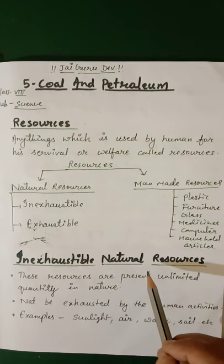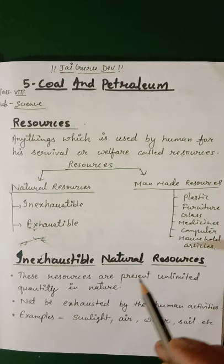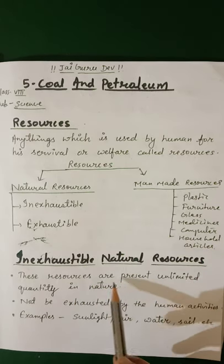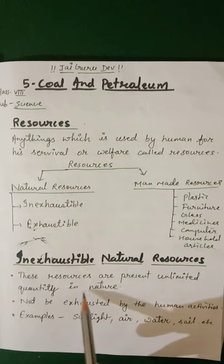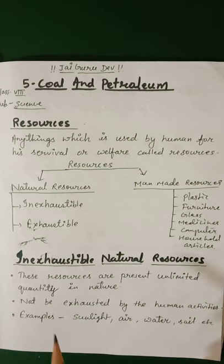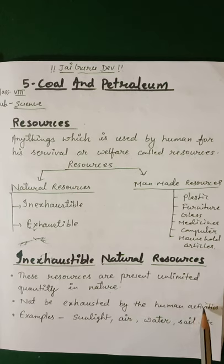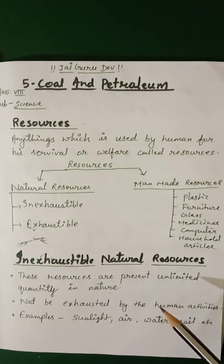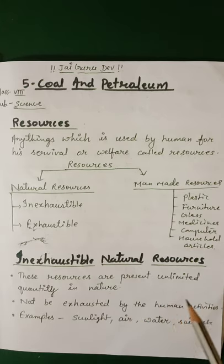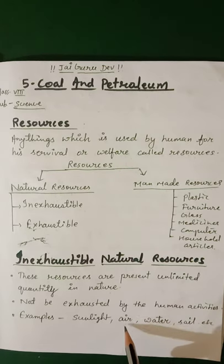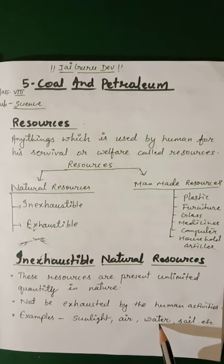Now let's start with inexhaustible natural resources. We can also call them renewable resources. These resources are present in unlimited quantity in nature and are not exhausted by human activity — meaning they do not finish even if we use more and more, because they are present in plenty. Examples: sunlight, air, water and soil.